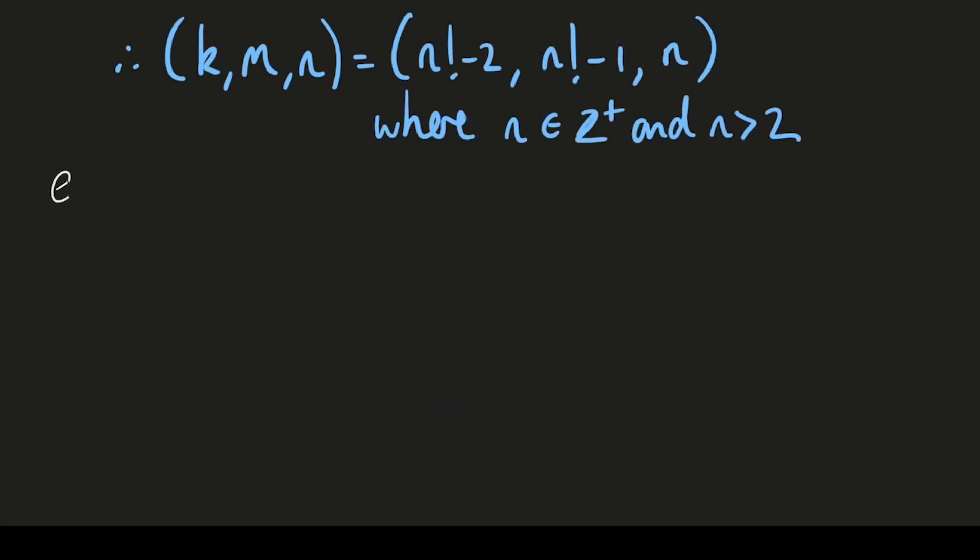Just to check we've got that right, let's take another example, say n is 7. Now 7 factorial is 5,040. k from our solution has to be n factorial minus 2. So in this case that's going to be 5,038. m is going to be n factorial minus 1, that's 5,039.